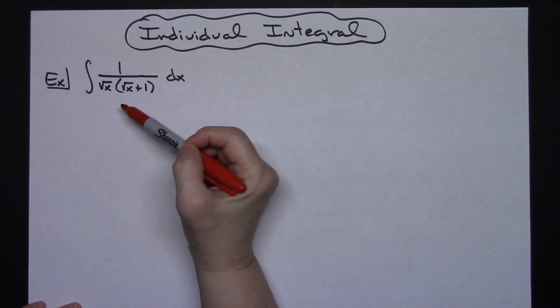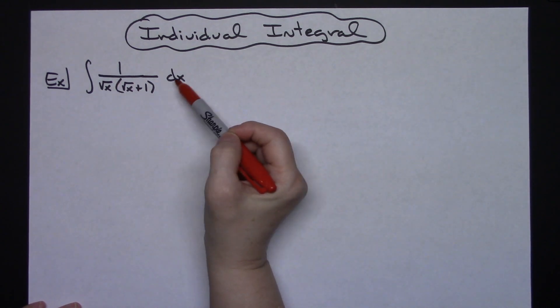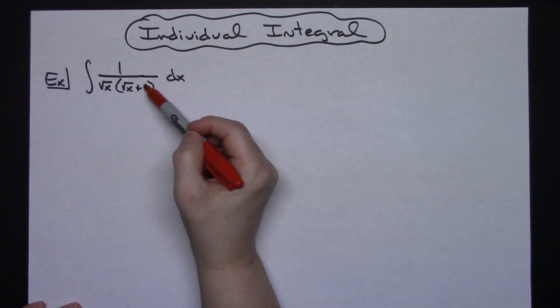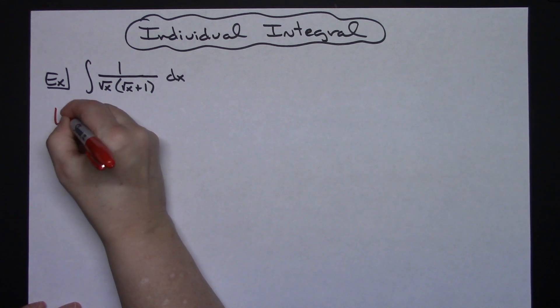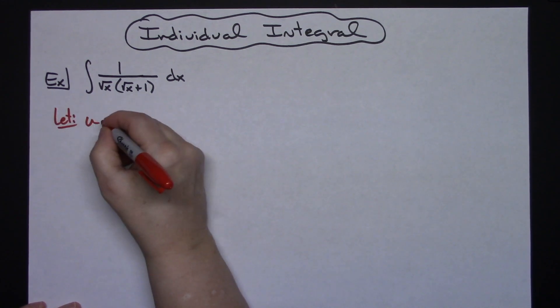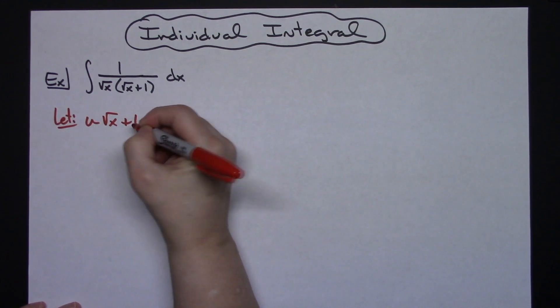We're going to take a look at the integral of 1 over square root of x times square root of x plus 1 dx. I am going to start with letting my u be this inside part of what's being multiplied here on the bottom. So I'm going to let my u be the square root of x plus 1.